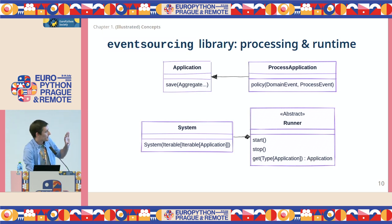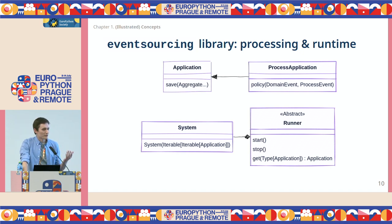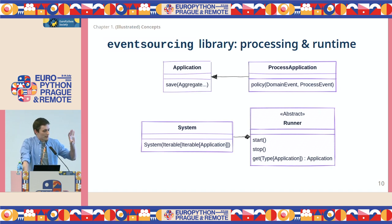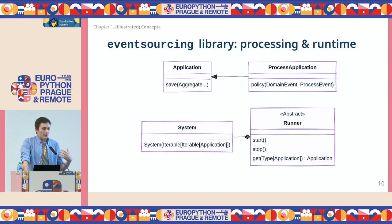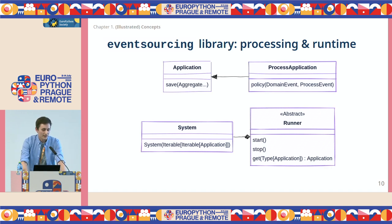A quick look at the infrastructure with the event-sourcing library before looking at how we can get the read models. The application is the programmatic entry point to a domain — it basically holds the public commands in the domain and provides the means to persist the aggregate events. We can basically persist one or more aggregates at once atomically. That's the point of the application — it is the unit of work.